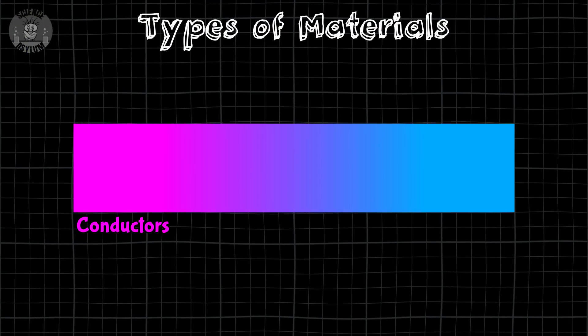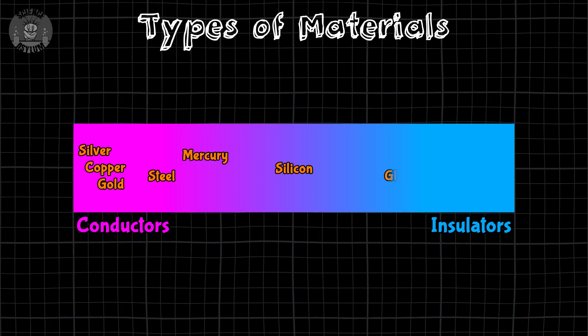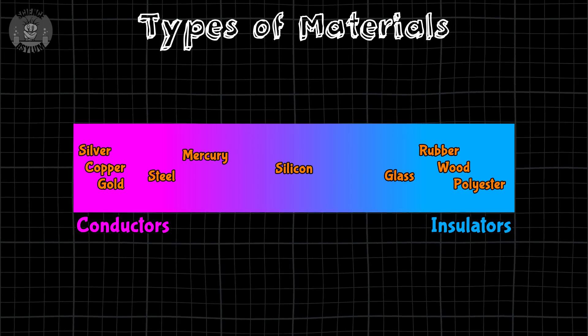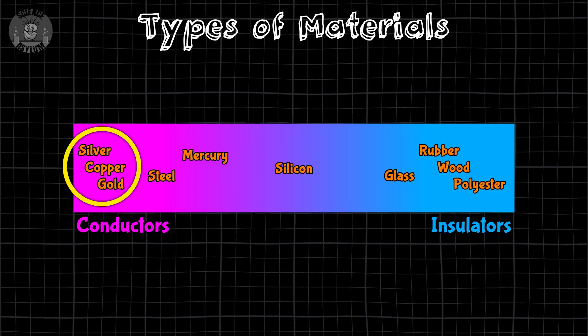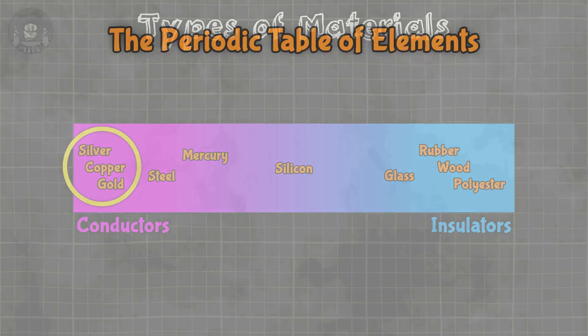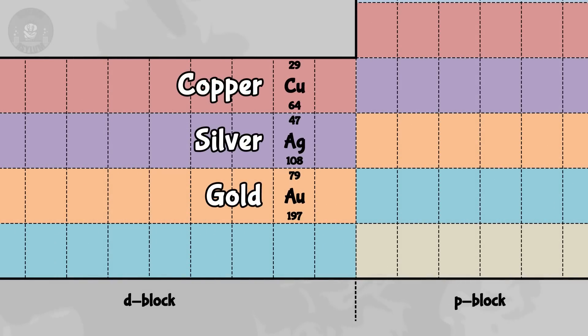No material is a perfect example of either type, but the three best conductors are silver, copper, and gold in that order. It's no coincidence that those all fall in the same chemical group — they each have one very loose electron on their outer edges. That alone doesn't make them a good conductor though; a material isn't made of one atom, it's made of a bunch of them, so we need to see how those atoms work together.